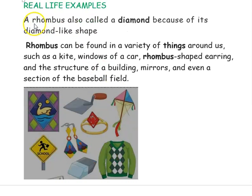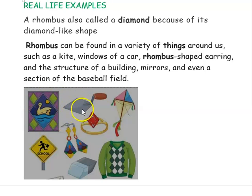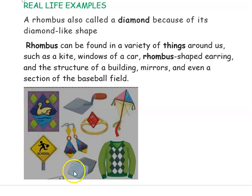Let us see some real life examples of rhombus. A diamond shape looks like a rhombus. A variety of things around us look like a rhombus shape: kite, window of a car, rhombus-shaped earring, the structure of a building, mirrors, and even a section of a baseball field. Also tiles, rings, sweater designs, sign boards, and erasers shaped this way are all rhombus-shaped.